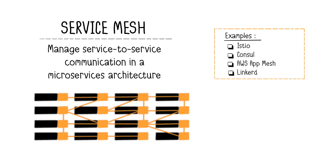And this is where the Service Mesh comes into play. A Service Mesh is a dedicated infrastructure layer that takes care of these inter-microservice communication functionalities. It is an infrastructure layer that sits between the application and the network via a proxy. Examples of Service Mesh implementations include Istio, Consul, and AWS App Mesh.